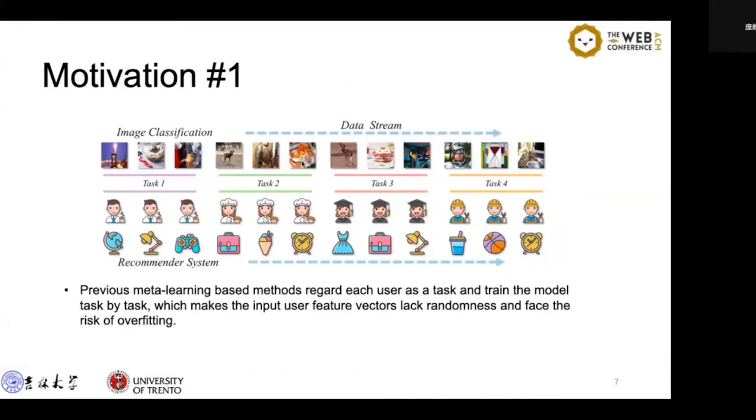However, in recommender systems, because the interaction data are divided into different tasks according to different users, the information from interactions of only one user are available in one task. From the perspective of the training process, the data stream received by the recommendation model is grouped according to users, which greatly weakens the representation and generalization ability of the model.